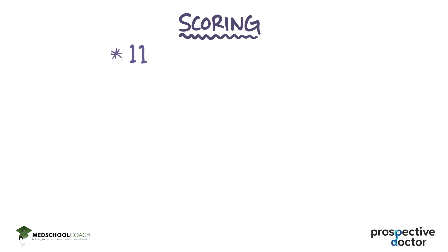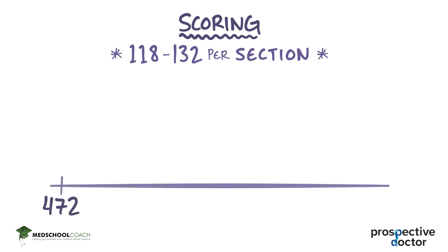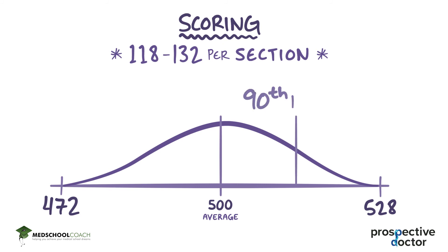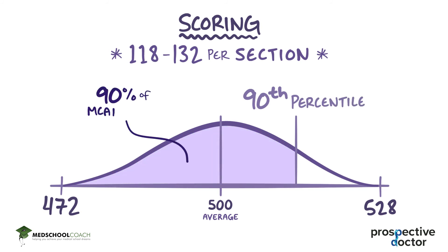Each section of the MCAT is scored between 118 and 132, giving a total score between 472 and 528 — a 56-point spread. The average score per section is 125, so the average student scores a 500. These numbers are best understood in terms of percentile, which reflects how you did compared to others who have taken the MCAT in the past three years. These days, the top 10% are scoring above about 513, which is roughly 128 or more in each section.